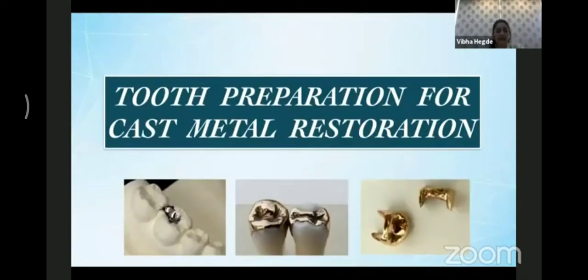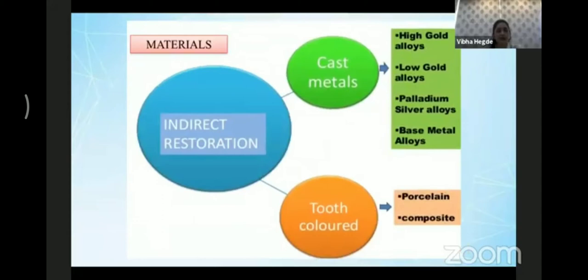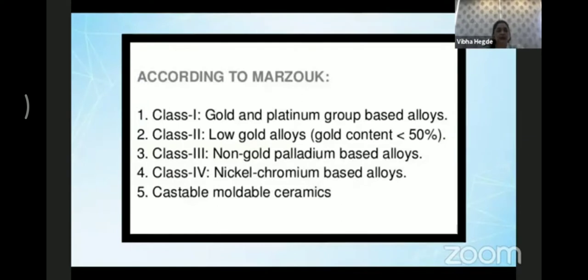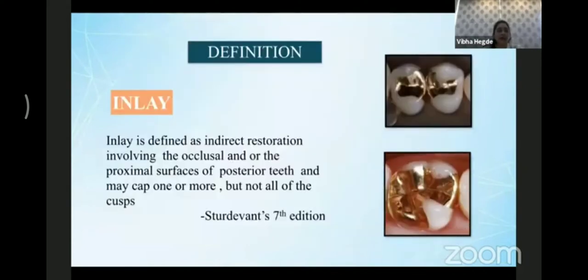I begin with the topic of cast metal restorations. This topic is from the final year, which you perhaps learned in first year and may not have given too much attention to, but cast metal restoration is very important. Most questions asked in finals are on this topic. These are indirect restorative materials, of which we have cast metals and tooth-colored restorative materials — ceramic restorations and high gold, low gold, and palladium-based alloys. According to Marsuk's classification, we have Class 1, 2, 3, and 4 alloys.